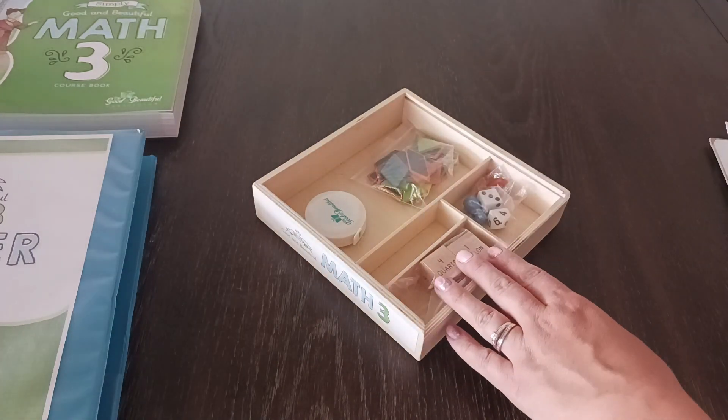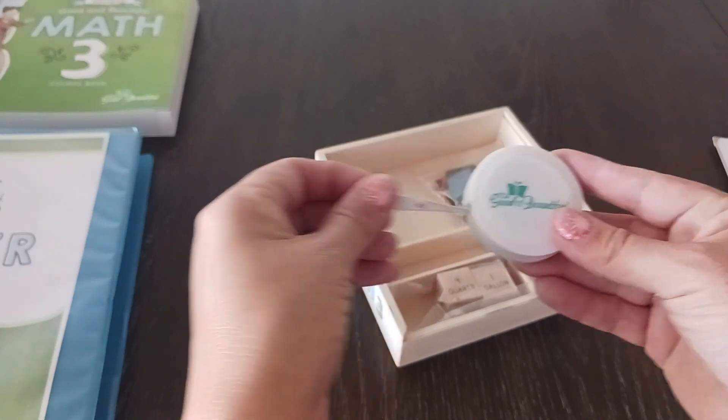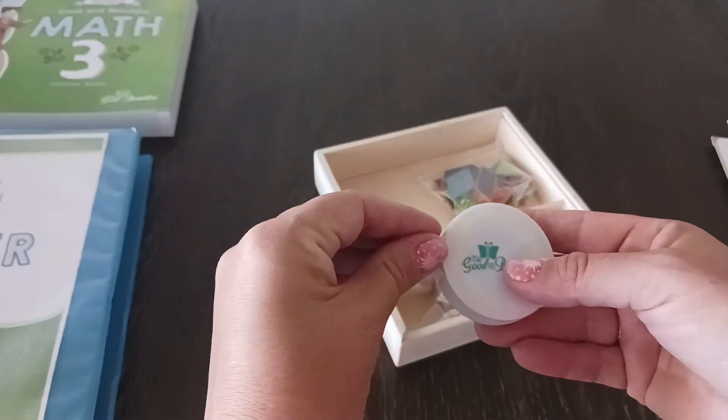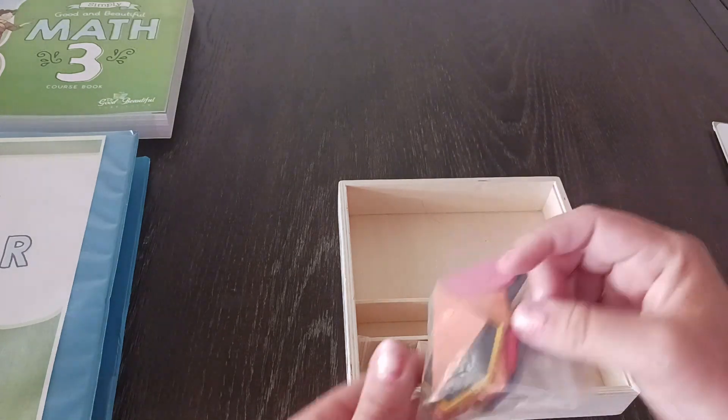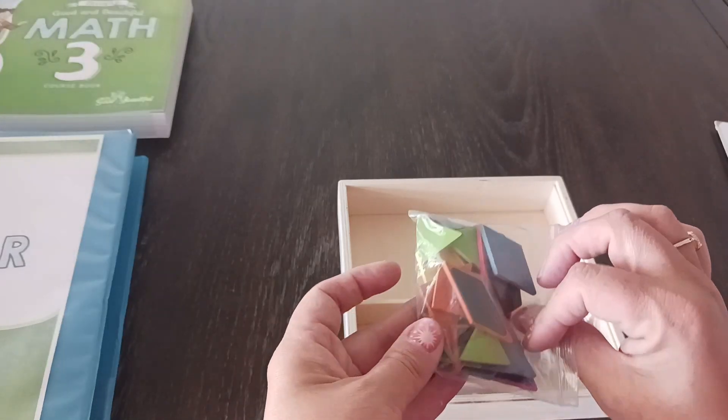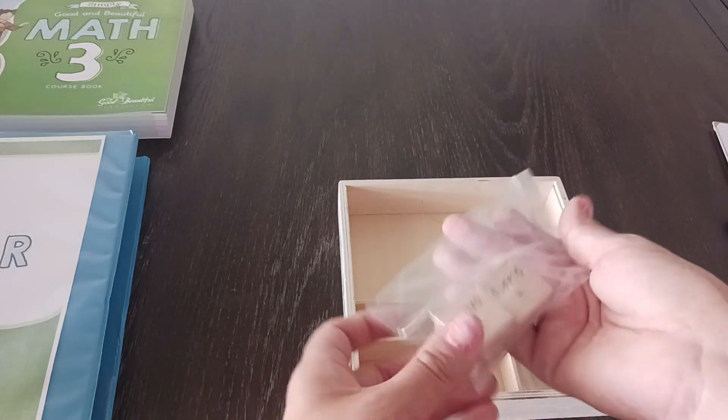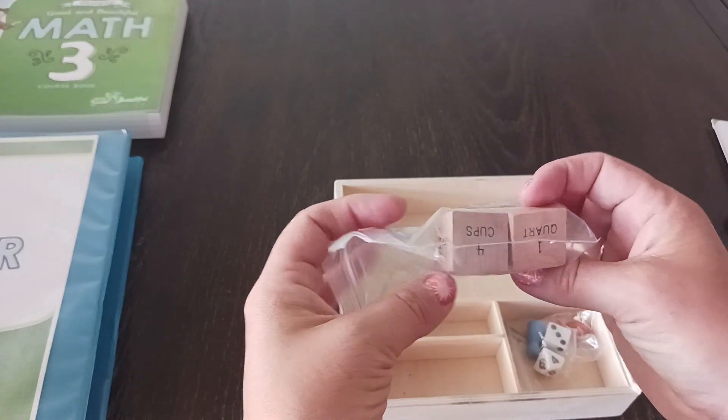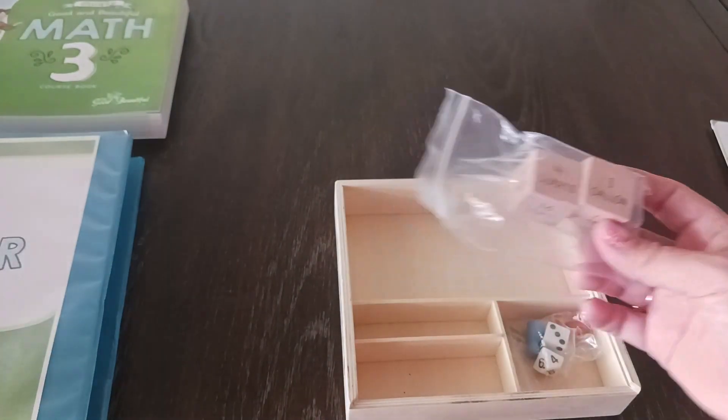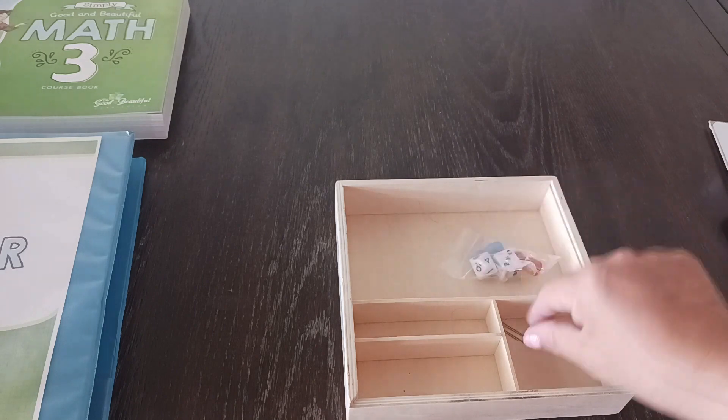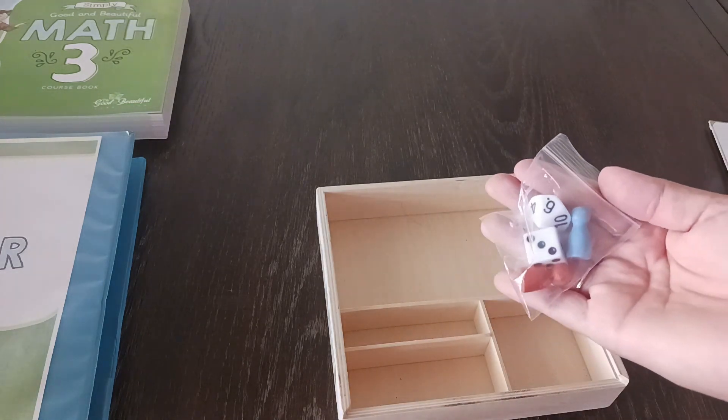So it's going to come with one of these tape measures. It's going to come with these little magnetic pieces. These are for different games that your child gets to play in their lessons, paperclip, some dice, and some game pieces.